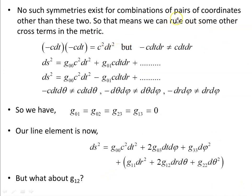No such symmetries exist for other pairs of coordinates, so we can rule out those cross terms. For the combination of t and r: time reversal of t gives −c dt, but r is not reversed, so −c dt dr does not equal c dt dr — this cross term is ruled out. If we didn't rule it out, under time reversal part of the line element would become negative while the original is positive, making the line element non-invariant.